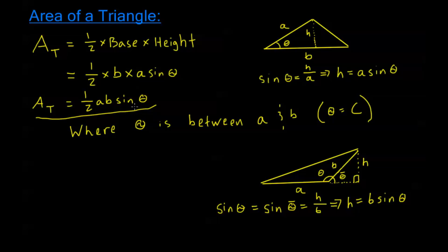And notice again, we must have that theta is between a and b. It needs to be the angle that a and b share a common vertex at. It can't be this angle up here or this angle down here. It needs to be the one between.